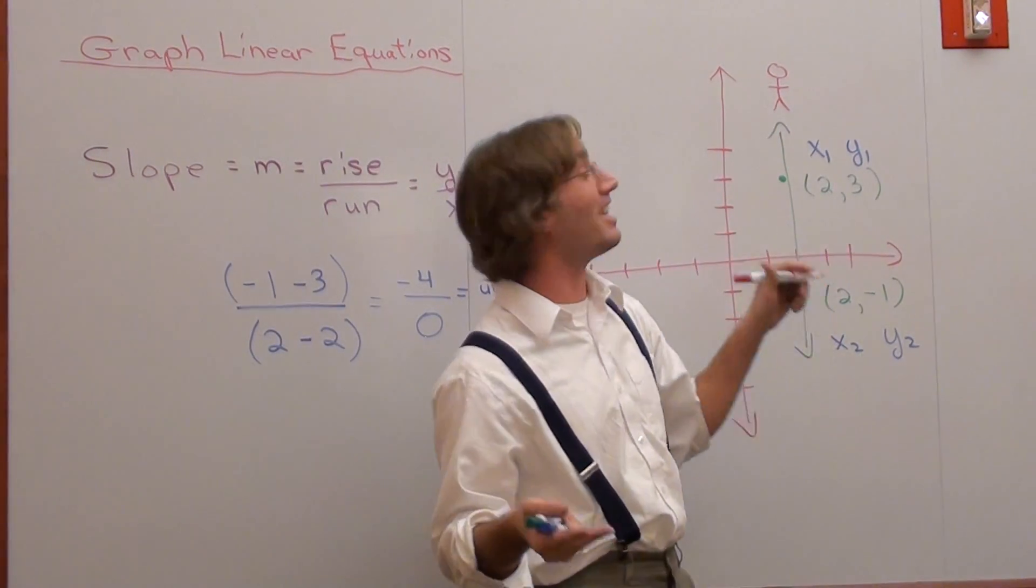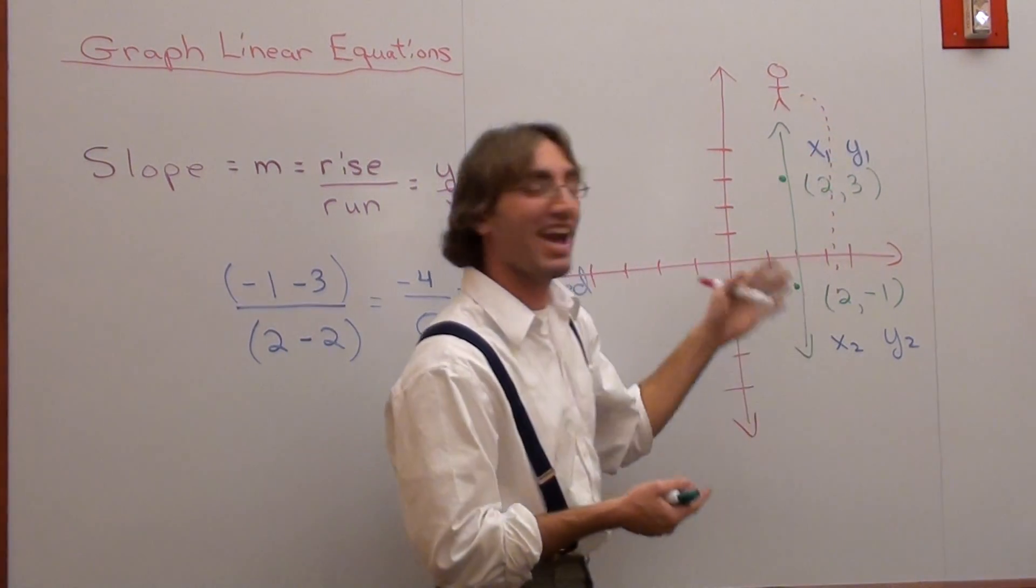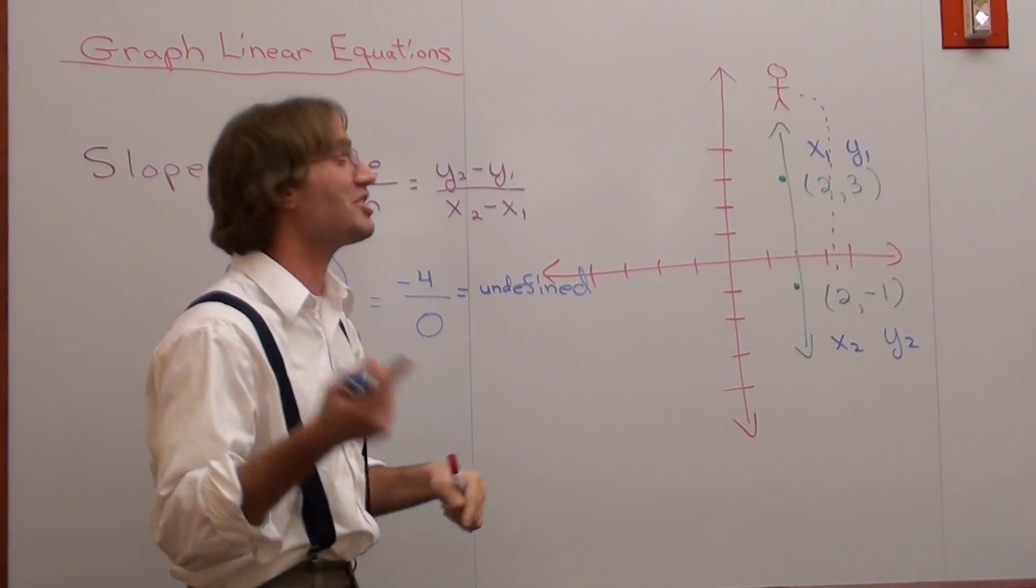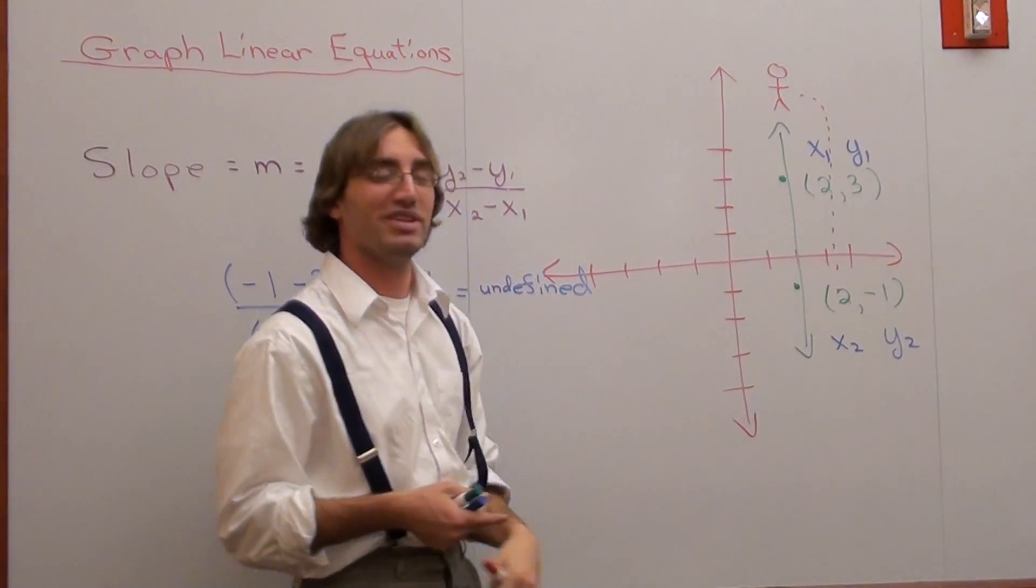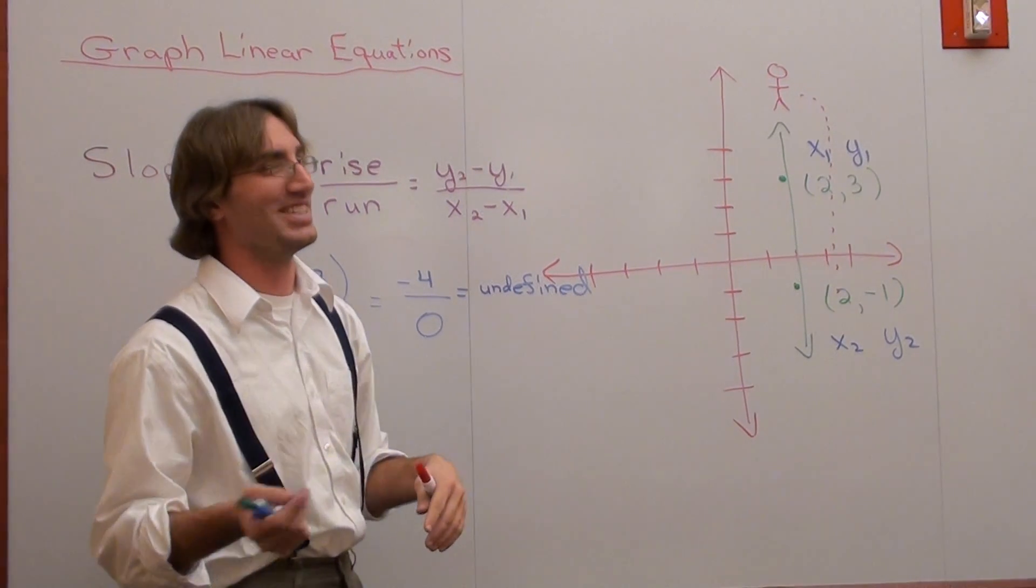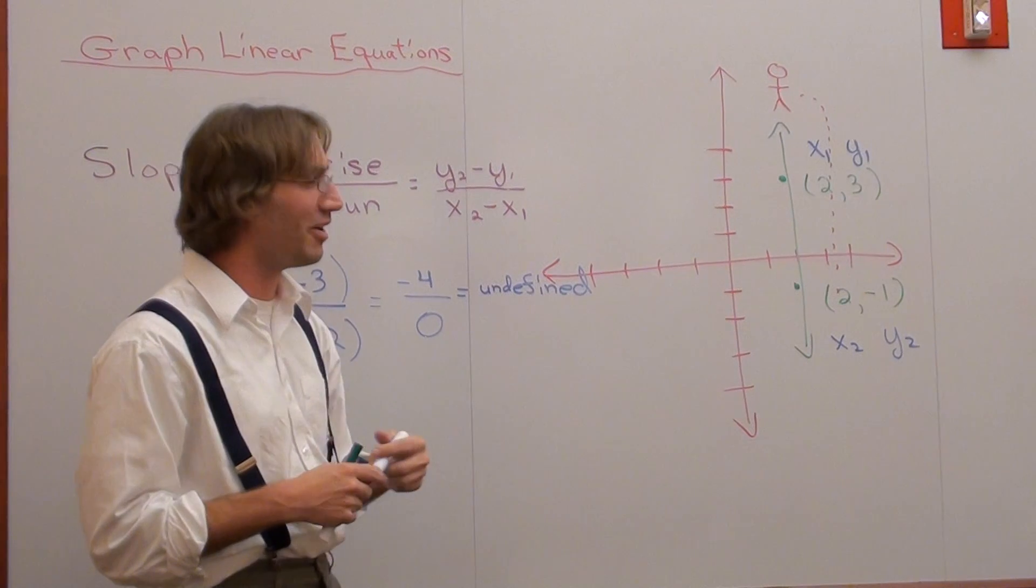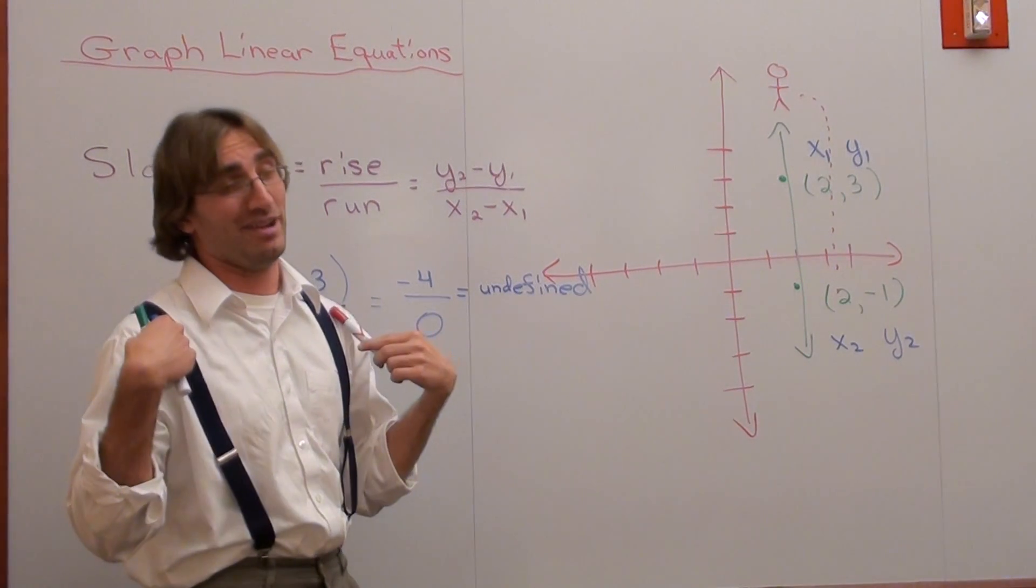'Undefined,' as they keep falling and falling and falling. That's why a vertical slope is undefined. Actually, that's not true. That's not the reason. It's not because somebody screams undefined. Rather, it's because the denominator is zero, but I thought that was pretty good.